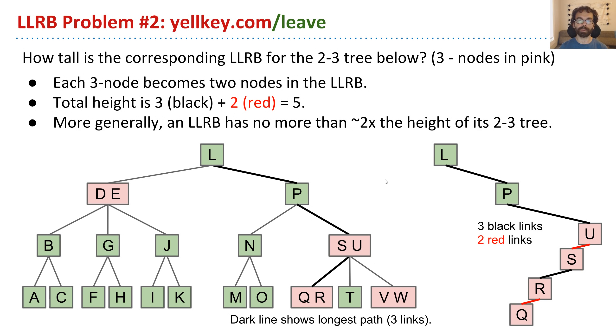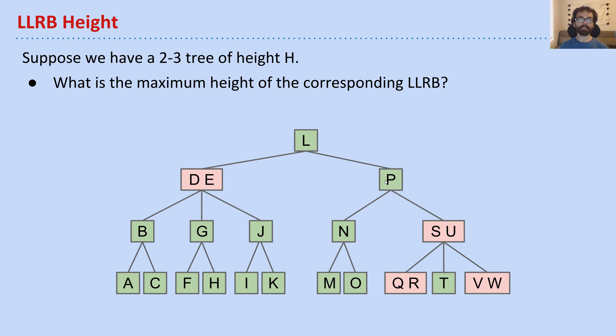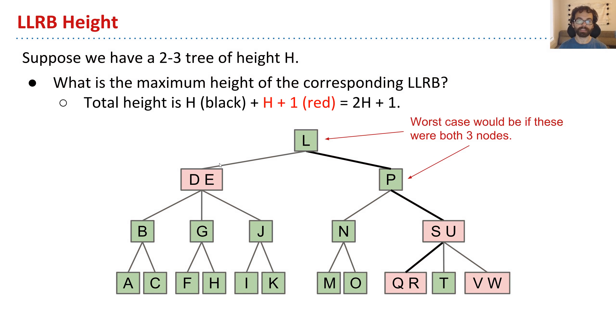So let's probe this last point a little more carefully. Let's say we have a 2-3 tree of height h. So here it's of height 3. I want you to tell me what is the actual literal maximum height of the corresponding LLRB. And you give your answer in terms of h.